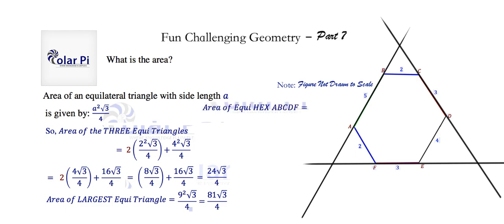And therefore, the area of our equilateral hexagon, A, B, C, D, E, F, I left out the E, but you get it. The hexagon area is, drumroll, well, there's no drumroll, you know what to expect. 81 minus 24 and then times root 3 over 4. So 57 root 3 over 4, and I hope you enjoyed this video. Keep watching. Take care.